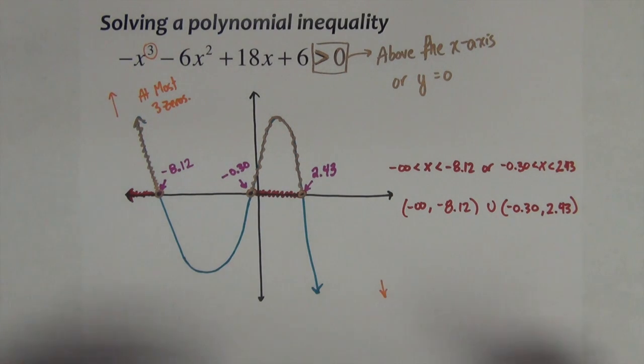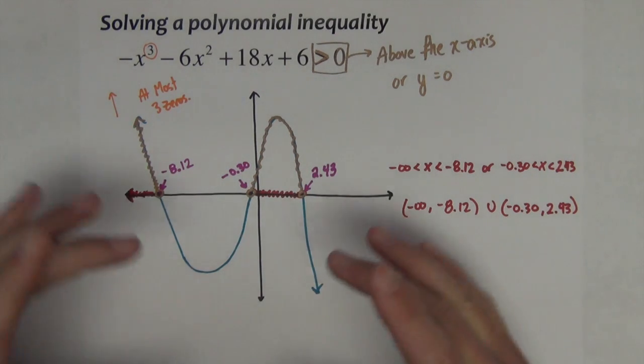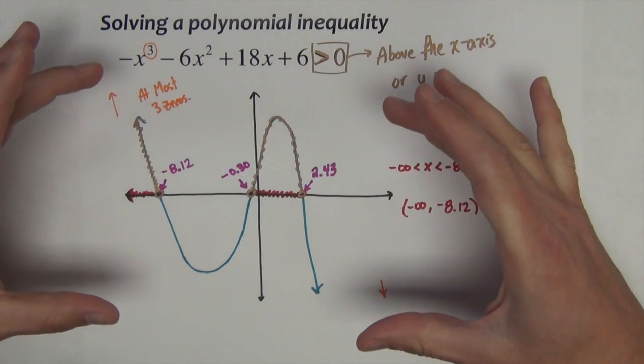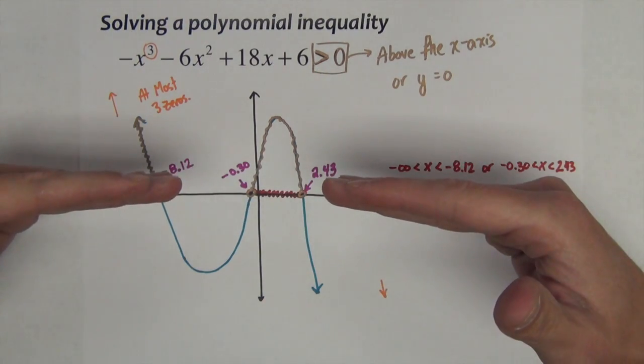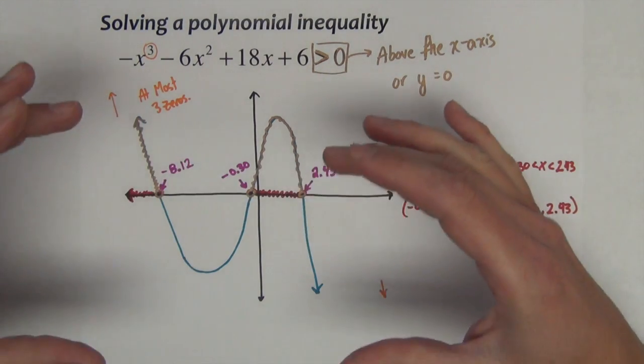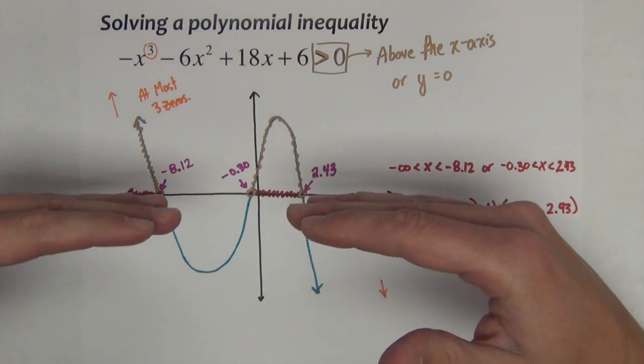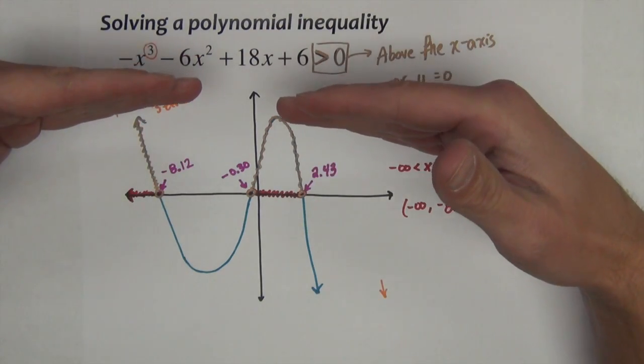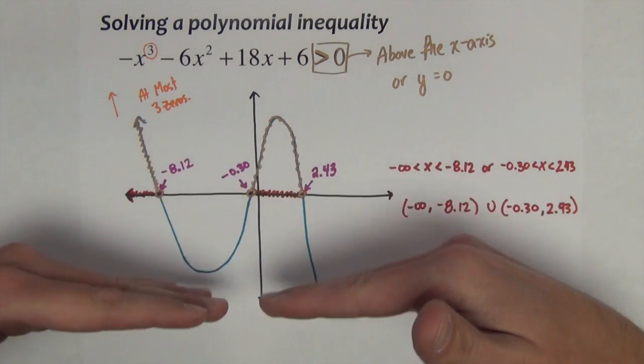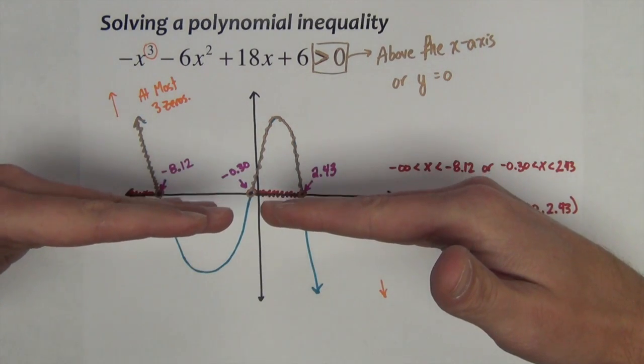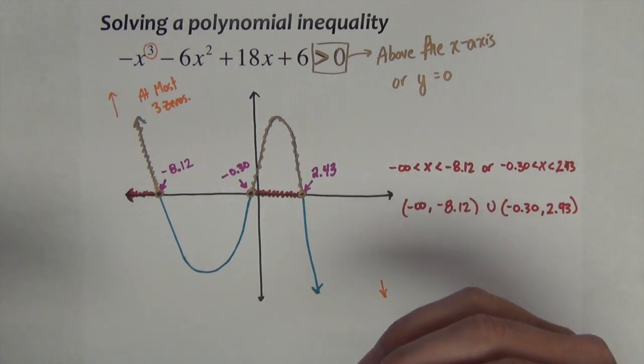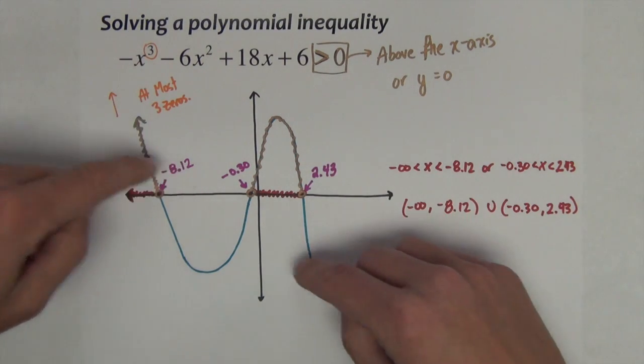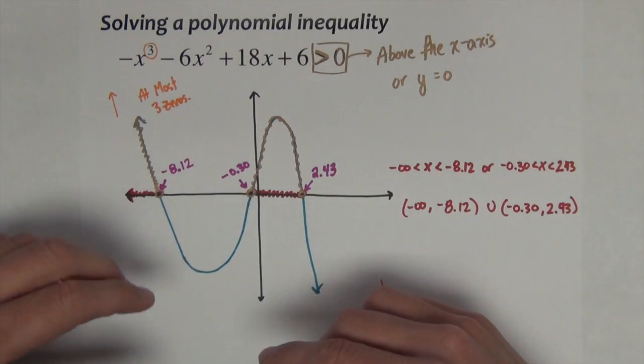So there you've got now two approaches. We've got the factoring approach using the number line and the sign charts. Or we've got this graphical approach where the graph is basically overlaid on the x-axis. The x-axis is like a number line, and we can use this graph to determine where we're either greater than 0 above the x-axis or less than 0 below the x-axis. We can interpret all of this visually, graphically. And if we know the properties of polynomial functions as far as end behavior properties, how many zeros to expect, etc., we can piece together those graphical properties to solve these polynomial inequalities very quickly and efficiently.